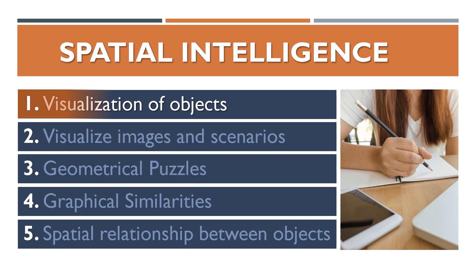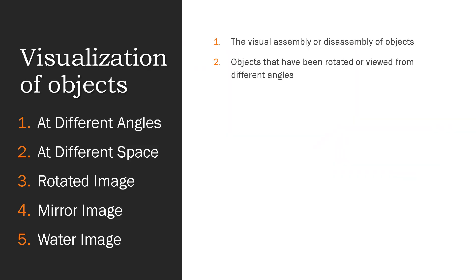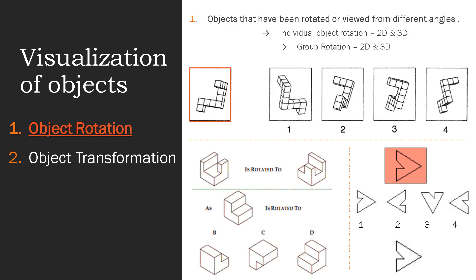Now let's see what visualization of objects is. It is the manipulation of objects from a stationary point of view or from different angles. We have two categories under visualization of objects from where questions can be derived: first is object rotation, and second is object transformation.